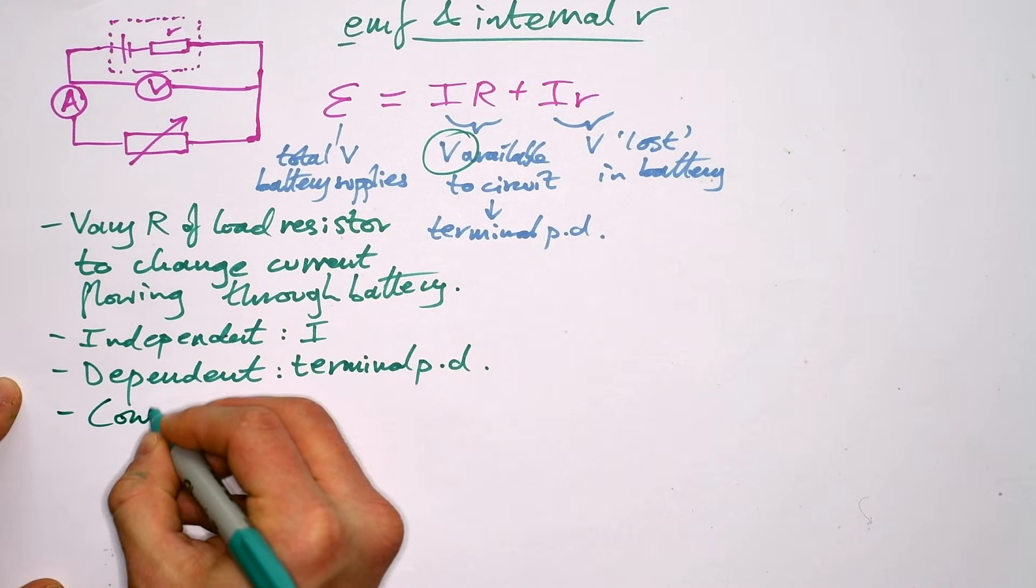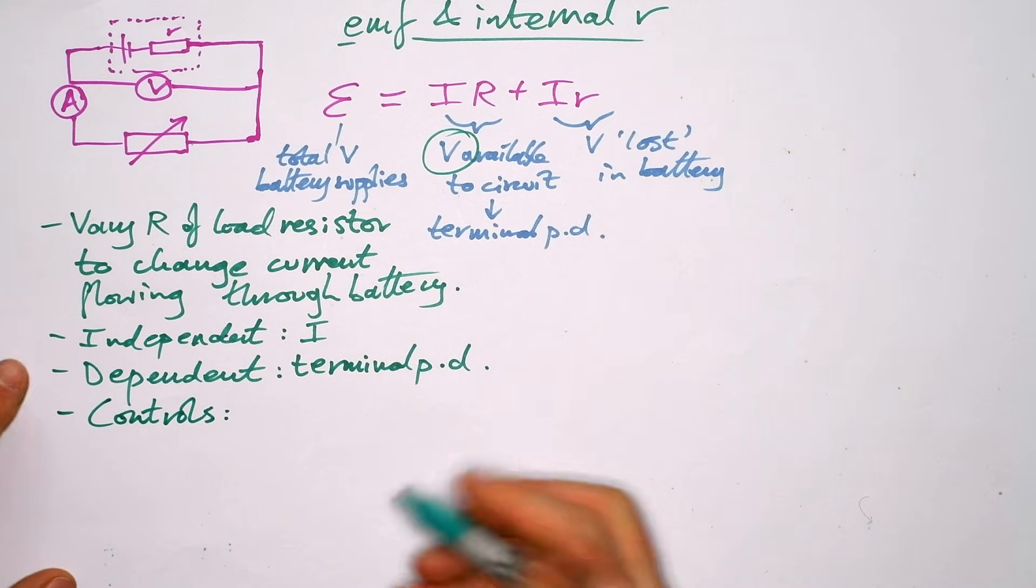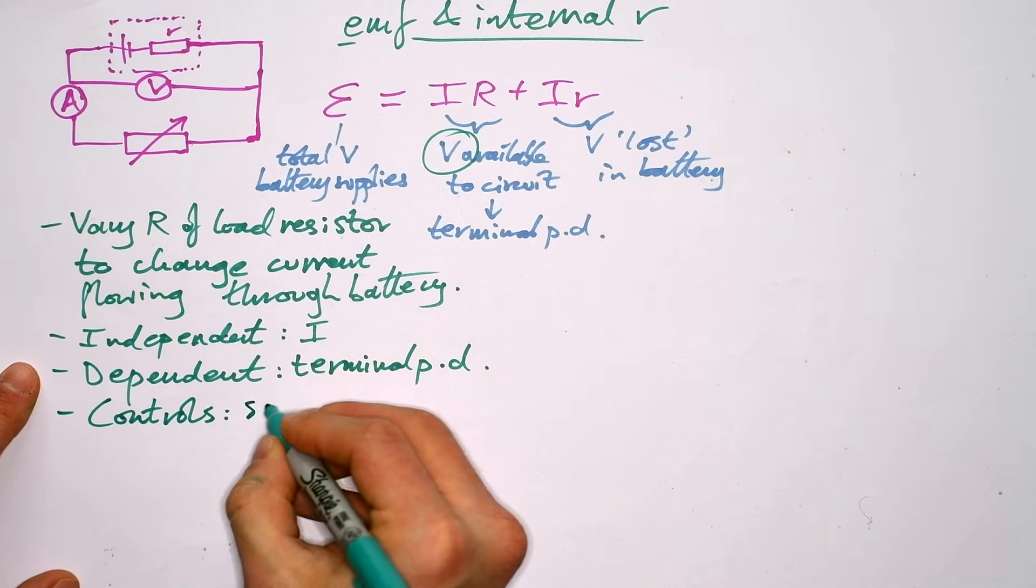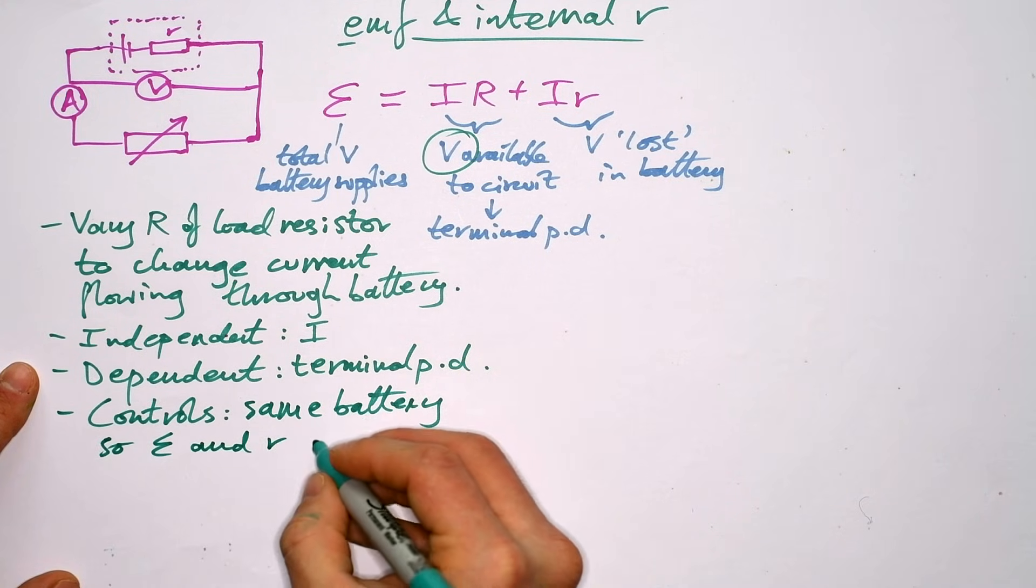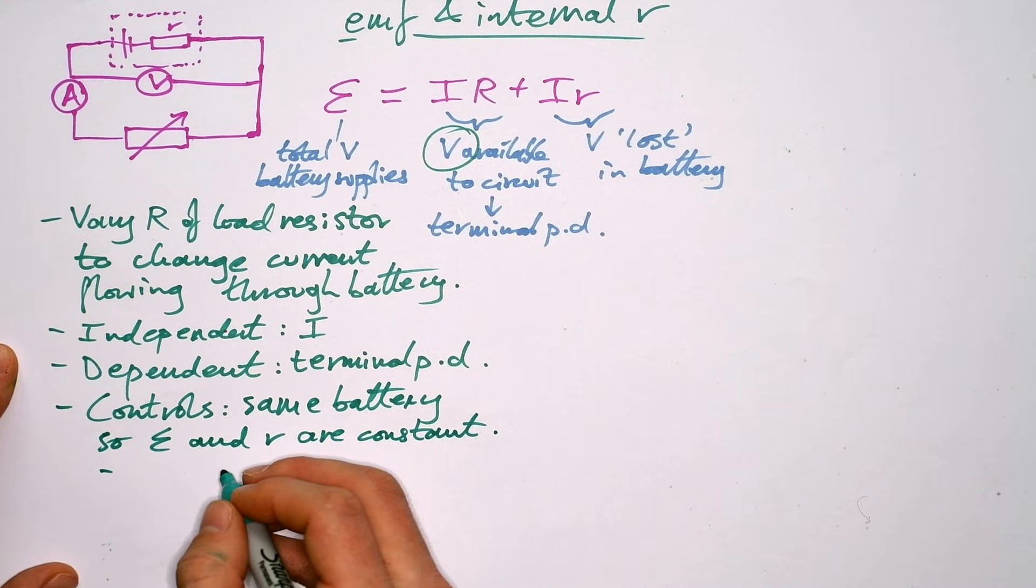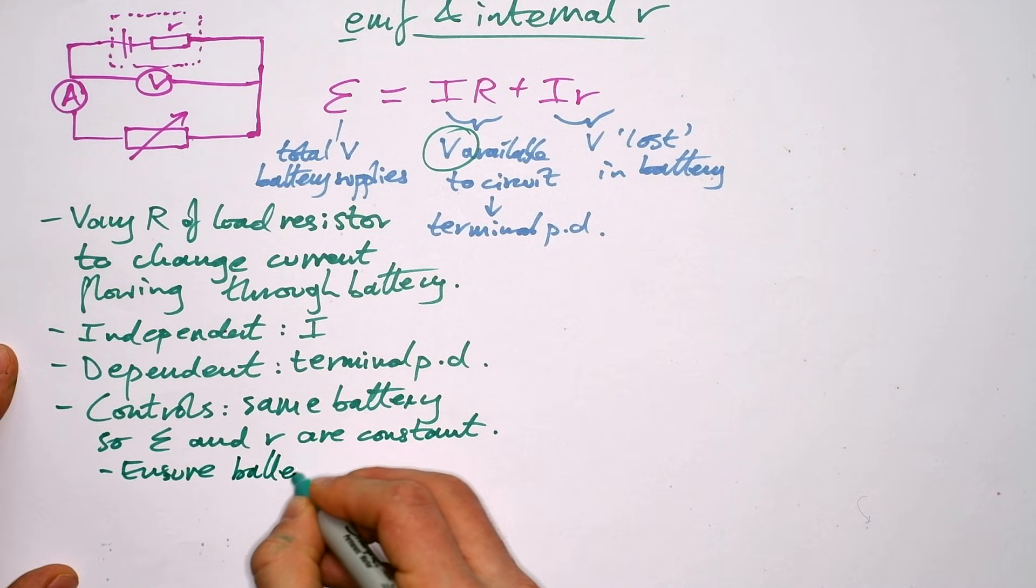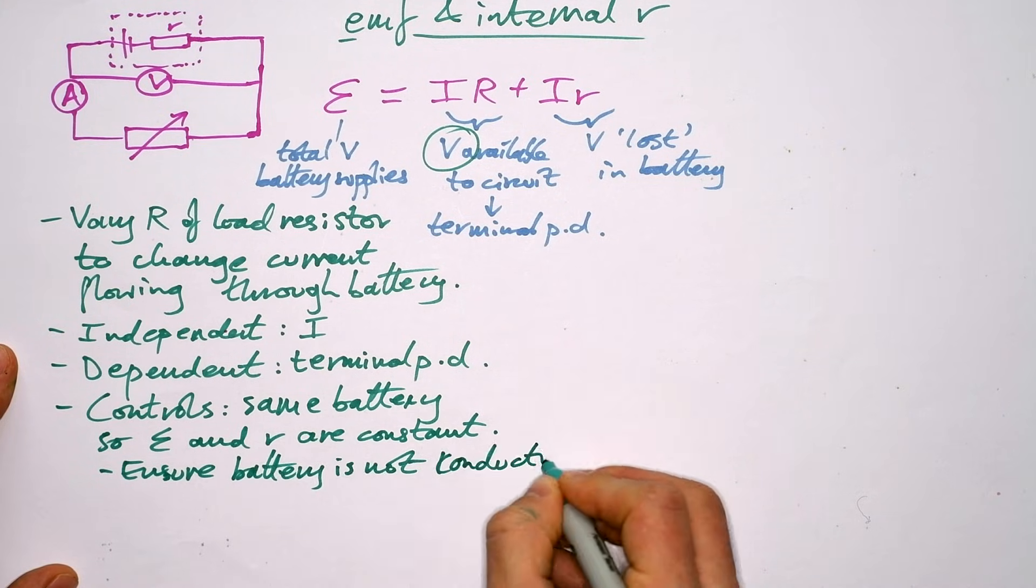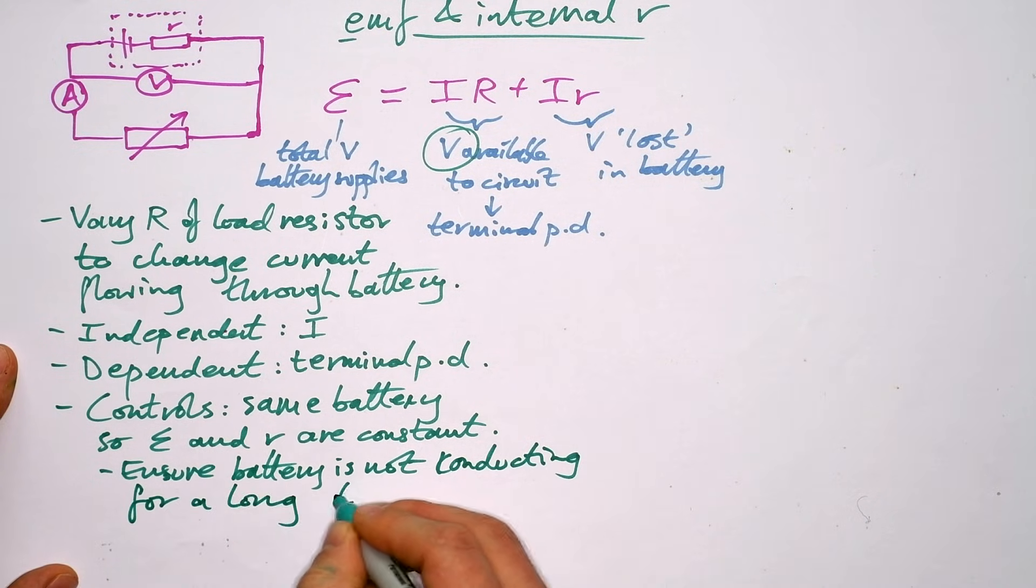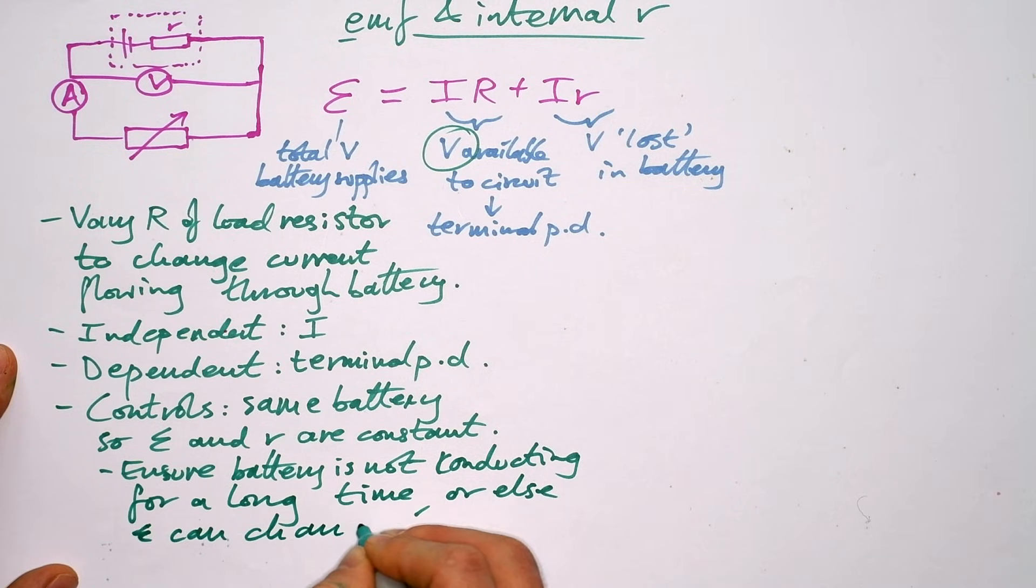Controls, well, there's actually not many controls. Because we're varying I and we're varying R, we just need to make sure that we're using the same battery. So the EMF and the internal resistance stay the same. And for that reason, we don't want to take ages to do the experiment. So we can say ensure battery or the cell is not conducting for a long time because otherwise the EMF can actually change. That's what happens. The EMF of batteries do decrease over time.